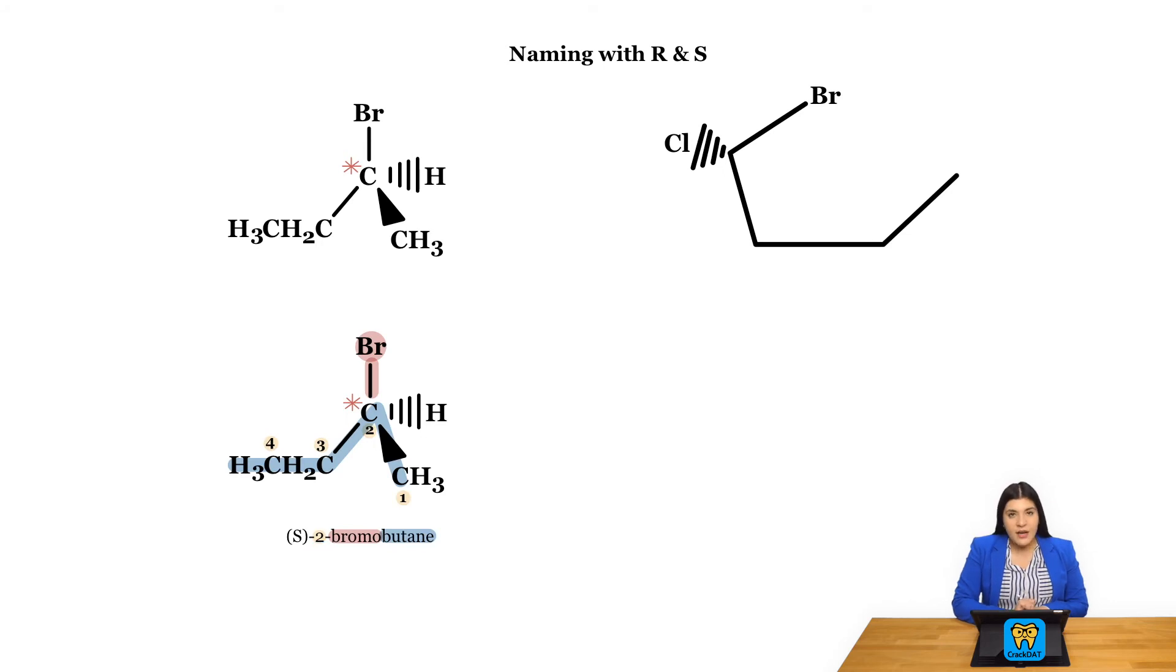Next we would identify what the overall configuration would be for this, so it would be S. And that's something else to note that we would capitalize the S and the R in this case, just like we did for E and Z. And we would place this in parentheses.